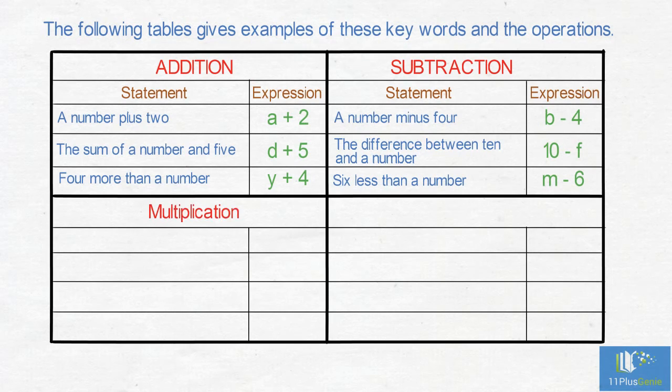Multiplication. The statement is: 6 times a number. The expression is: 6p. The product of 3 and a number is 3q. A number multiplied by 5 is 5r.